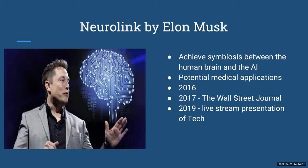Neuralink by Elon Musk — everyone knows Elon Musk, known for high-profile companies like Tesla and SpaceX. He recently started working toward achieving symbiosis between the human brain and artificial intelligence. Neuralink is developing a device that would be embedded in a person's brain, where it would record brain activity and potentially stimulate it. They hope this technology will have near-term medical applications. Neuralink was founded quietly in 2016 and came to public attention around 2017. In 2019, Elon Musk along with his executive team showed a live stream presentation about the Neuralink chip.